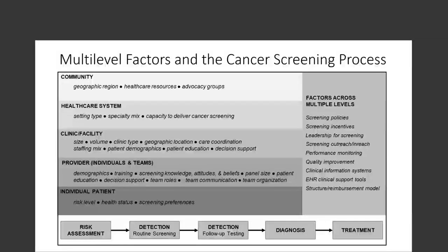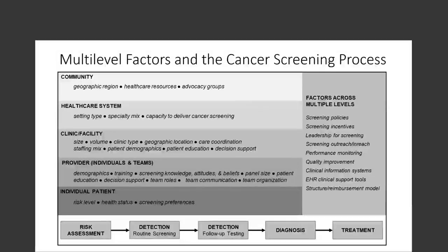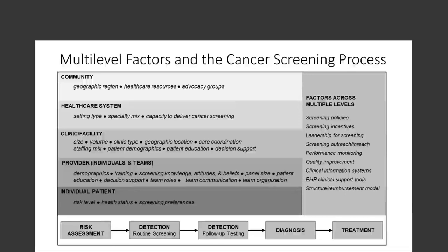We started with a multi-level framework when thinking about factors that might influence the cancer screening process — looking from risk assessment all the way to detection, diagnosis, and then treatment. We agreed from the start that there were numerous factors at multiple levels that could impact the cancer screening process. From the start, there were factors that clearly mapped to a specific level — for example, the training of a provider is clearly at the provider level. But what became really clear is that there are factors that could be at multiple levels, such as screening policies and incentives, and the relevant level actually may depend on the structure of the healthcare organization.